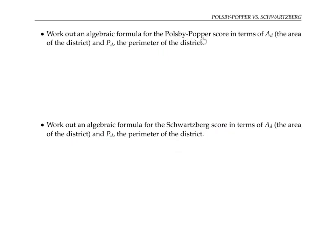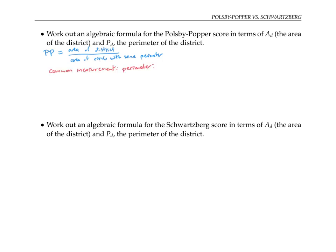In order to relate the Polsby-Popper score to the Schwartzberg score for a region, let's first rewrite the Polsby-Popper score in terms of two quantities: A_d, the area of the region or district, and P_d, the perimeter of the region or district. I'll rewrite the definition of Polsby-Popper, and focus on the measurement that the two regions have in common — both the district and the circle have the same perimeter. So I'll write that as P_c, the perimeter or circumference of the circle, equals P_d, the perimeter of the district.